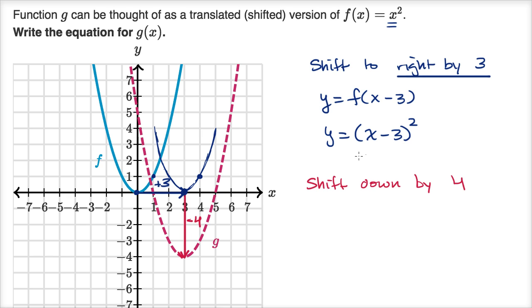So now that we've shifted to the right by three, the next step is to shift down by four. And this one is a little bit more intuitive. So let's start with our shifted to the right, so that's y is equal to (x - 3)².